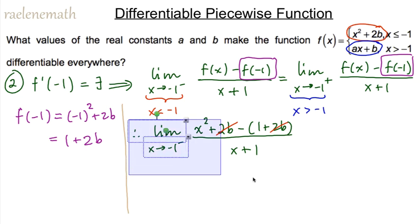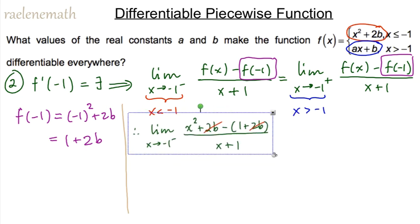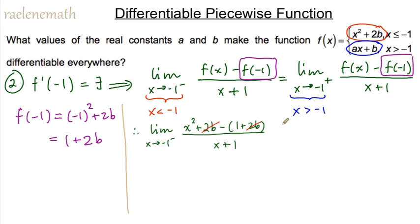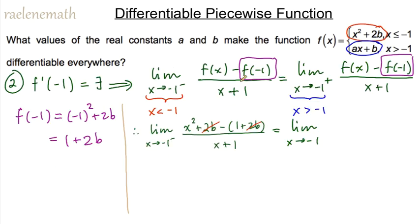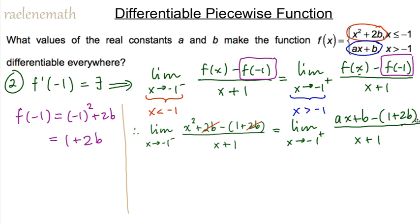For the right-hand derivative, the limit as x approaches negative one from the right substitutes the linear expression ax plus b, minus one plus 2b, all over x plus one. Now evaluating the left-hand limit: x squared minus one over x plus one gives zero over zero by direct substitution. Fortunately, x squared minus one factors as (x plus one)(x minus one), giving a common factor of x plus one. Canceling that factor and substituting negative one for x gives a left-hand derivative of negative two.